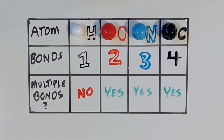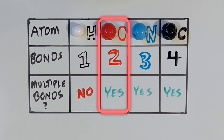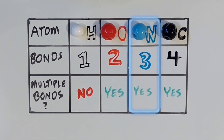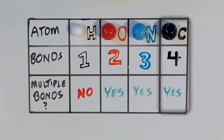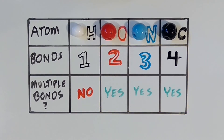To summarize, it appears that hydrogen can form one bond, oxygen can form two bonds, nitrogen forms three bonds, and carbon forms four bonds. It also seems that if an atom can form two or more bonds, it is possible for that atom to form those multiple bonds, such as double or triple bonds. These rules are pretty much always true — there are no exceptions we need to worry about in the scope of this video.